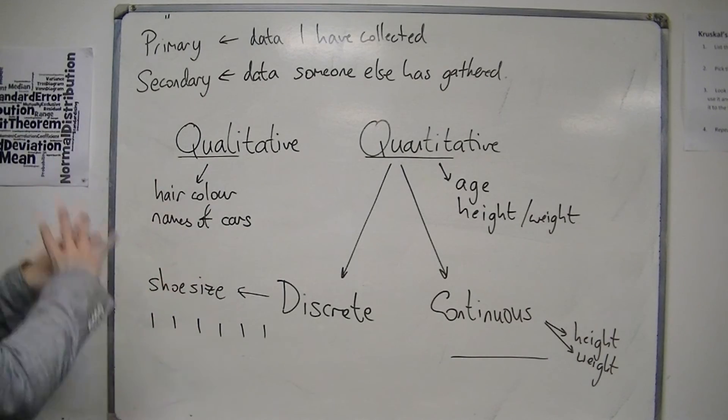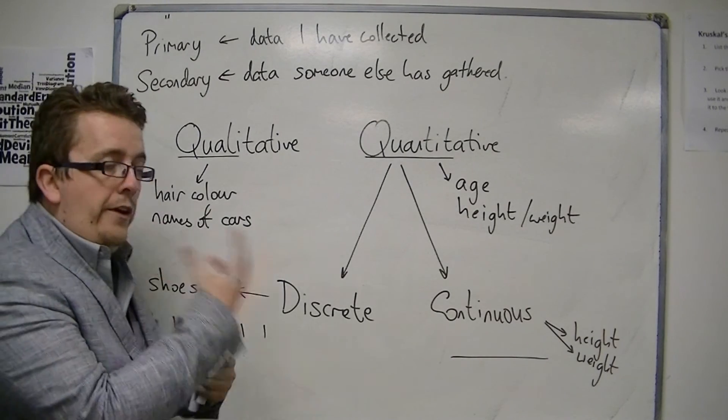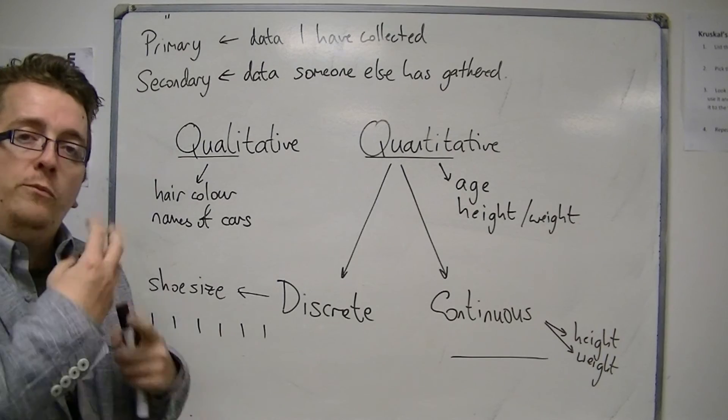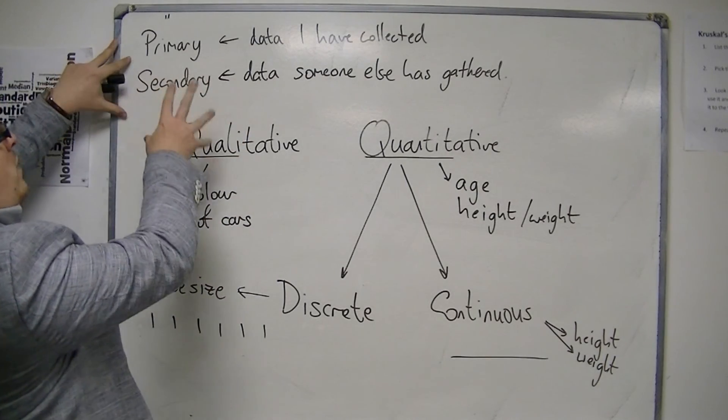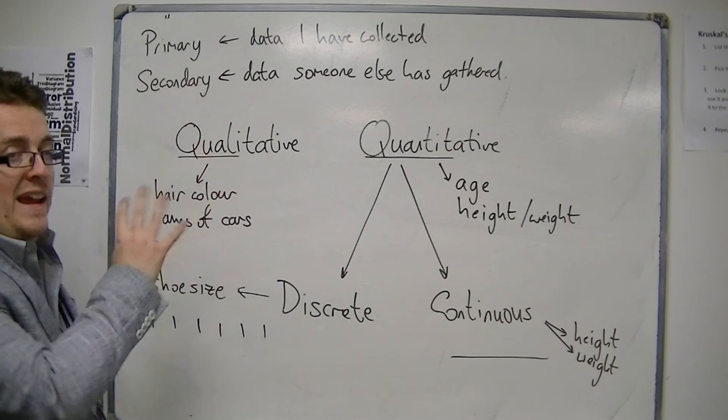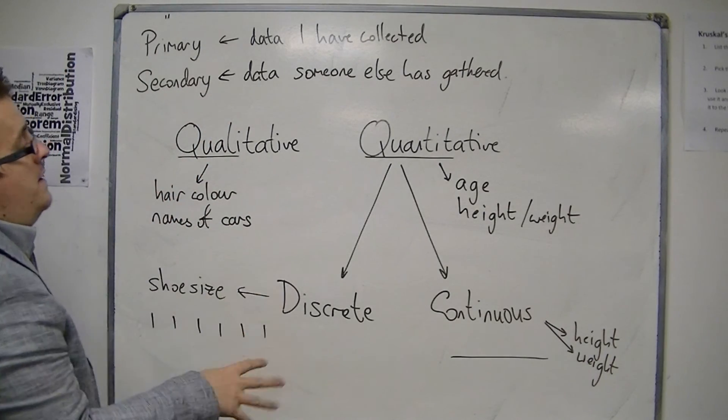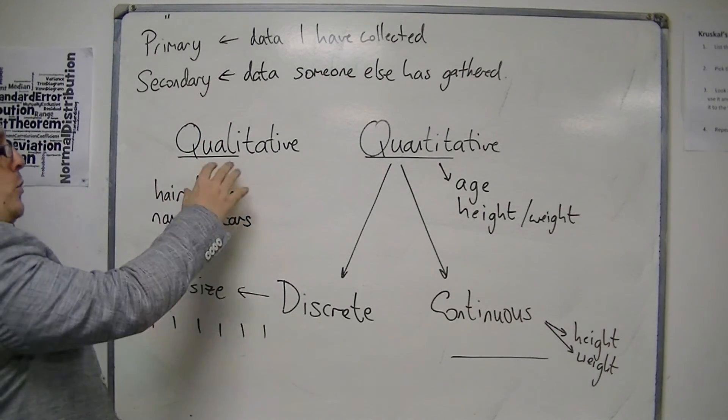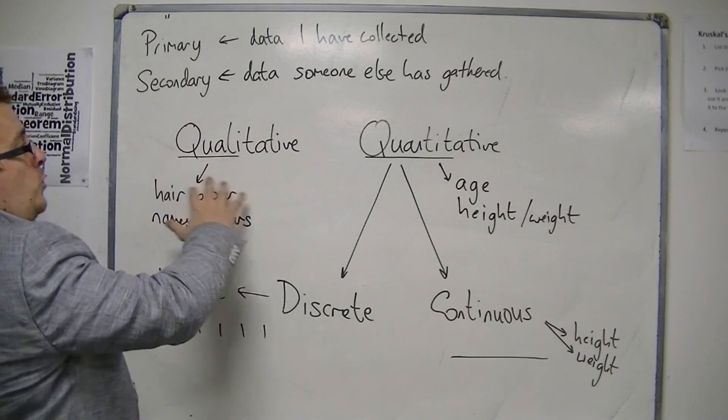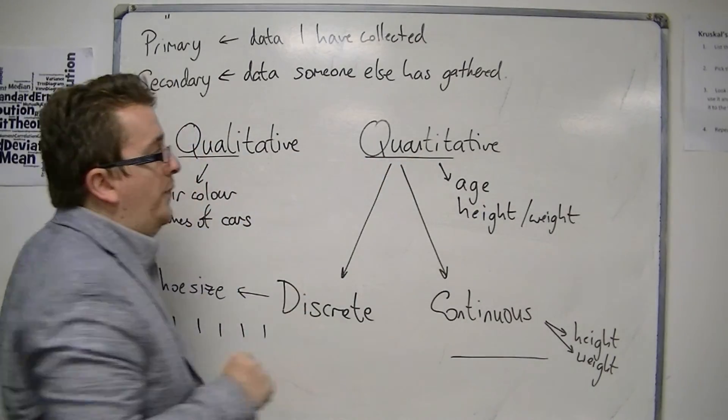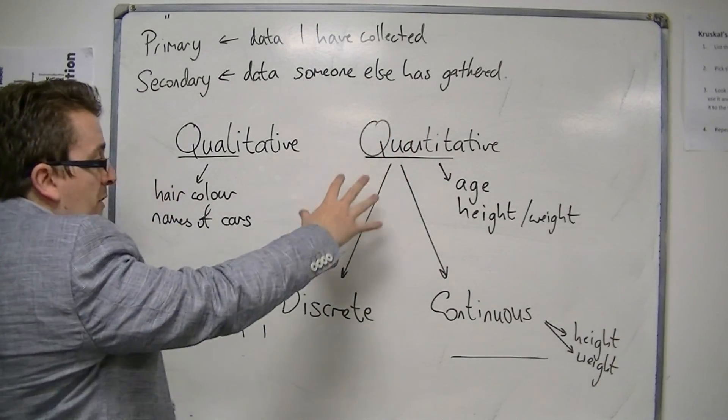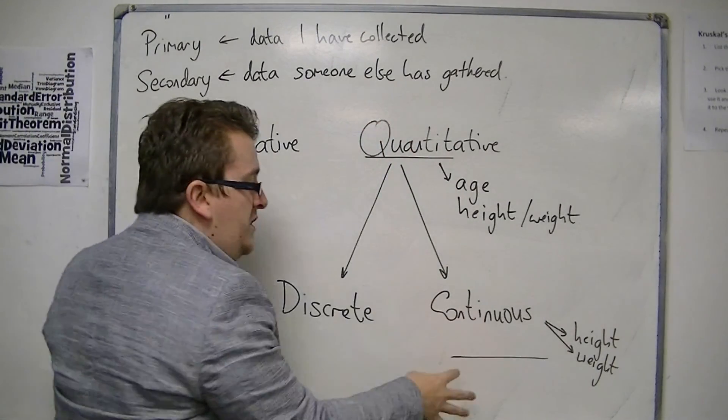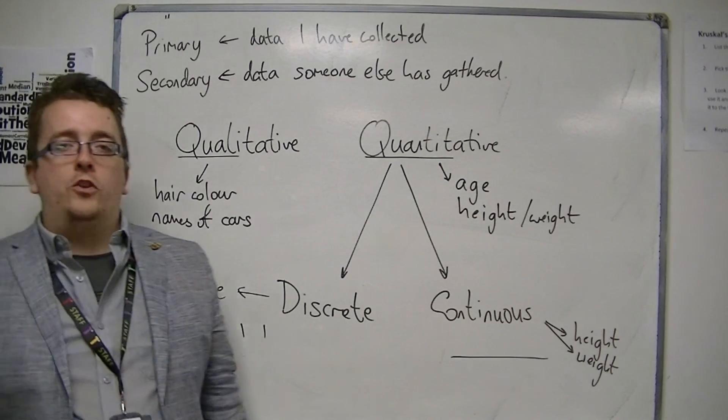So these are all the types of data that you need to be aware of and what they mean. You start off with these ideas of primary and secondary data, of who collected the data. Then, in a questionnaire, a question is either going to be related to qualitative data or quantitative. And then, in the quantitative, it's either going to be split up into discrete or continuous data, depending on the question.